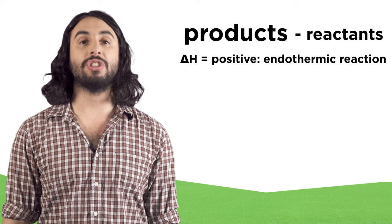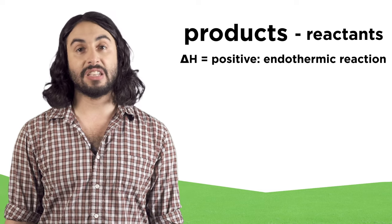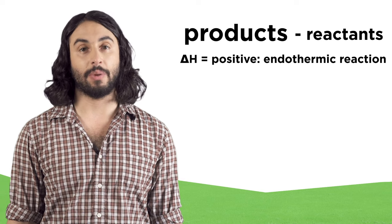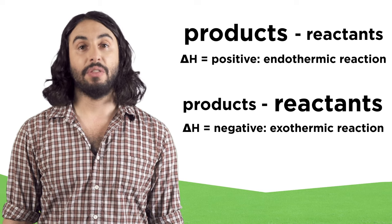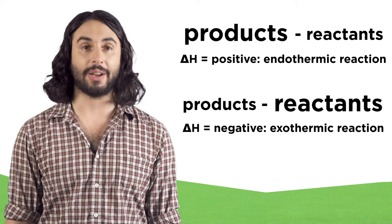If there is more energy in the products, delta H will be positive, meaning the additional energy had to be provided, making it an endothermic reaction. If there is less energy in the products, then that additional energy was released, making it an exothermic reaction.